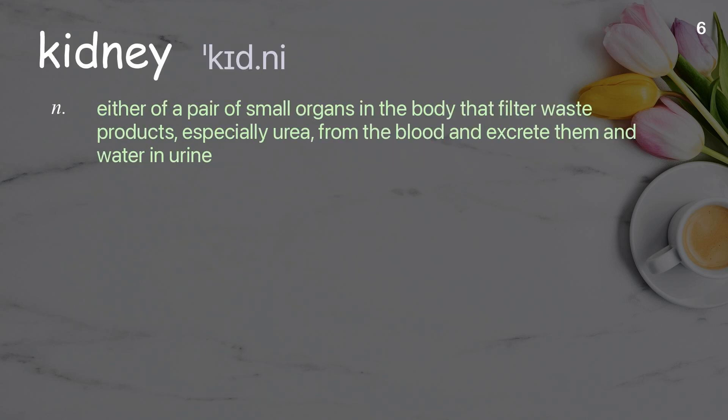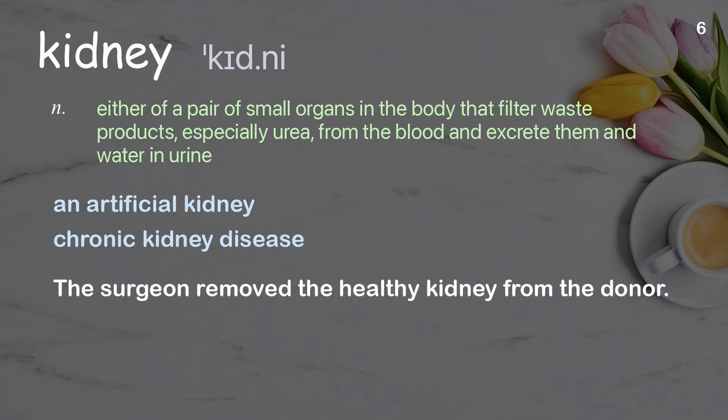Kidney: either of a pair of small organs in the body that filter waste products, especially urea, from the blood and excrete them and water in urine. Examples: an artificial kidney, chronic kidney disease. The surgeon removed the healthy kidney from the donor.